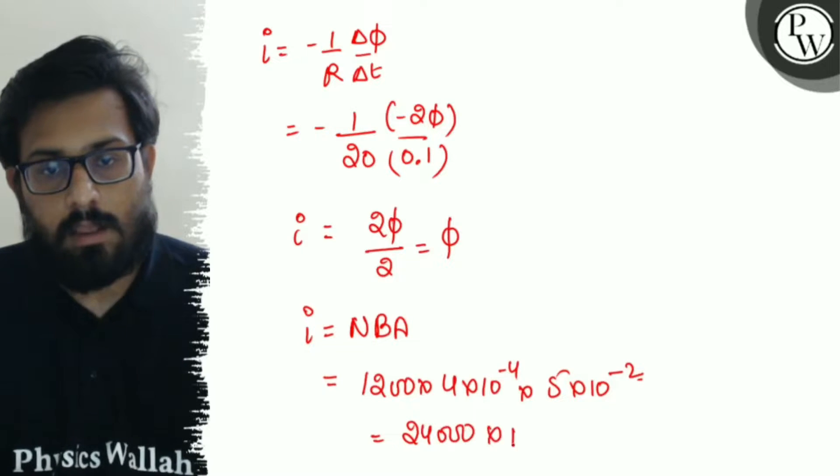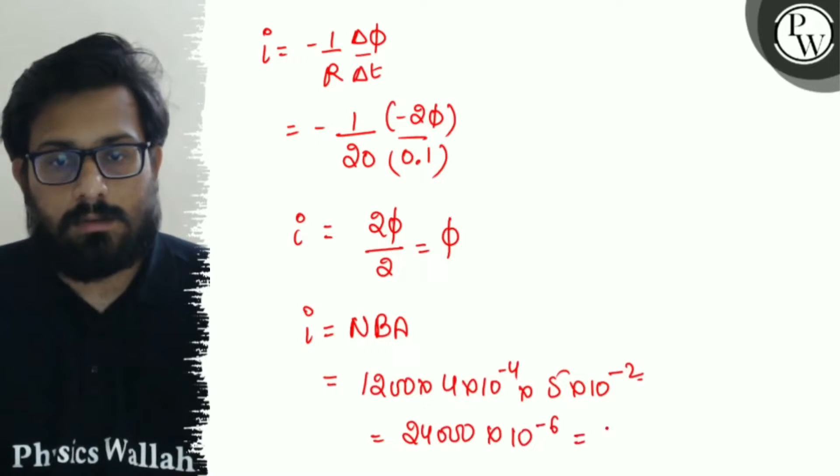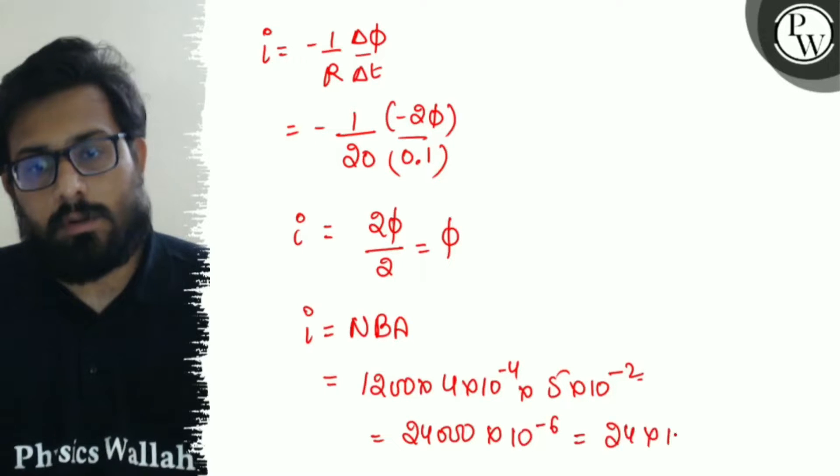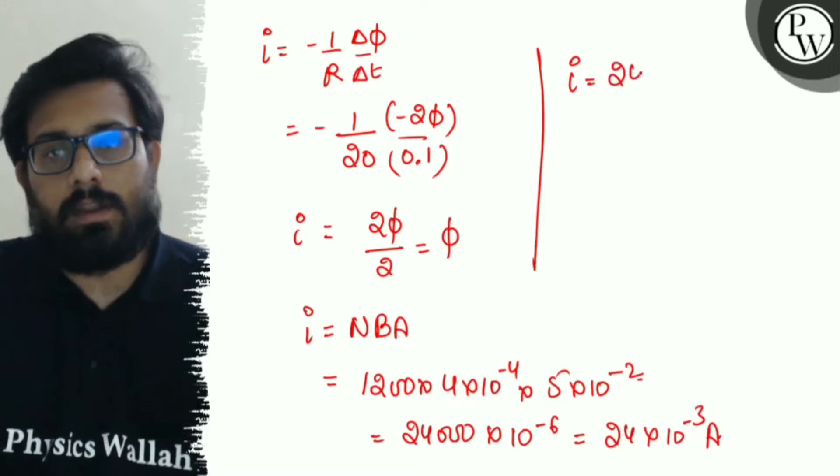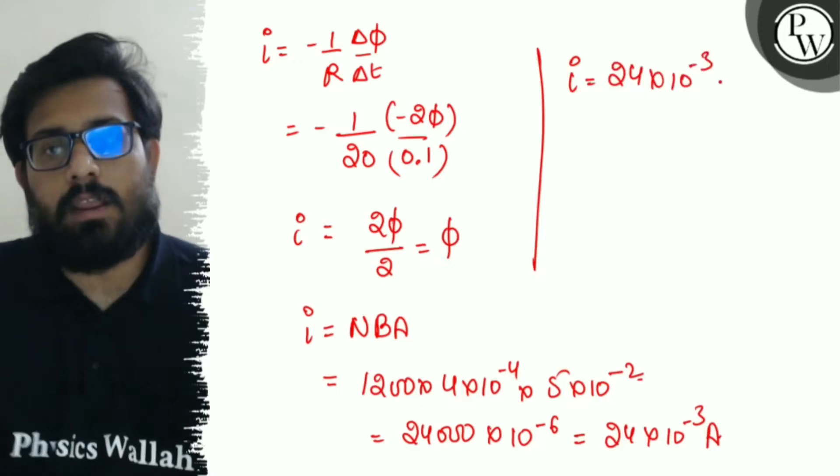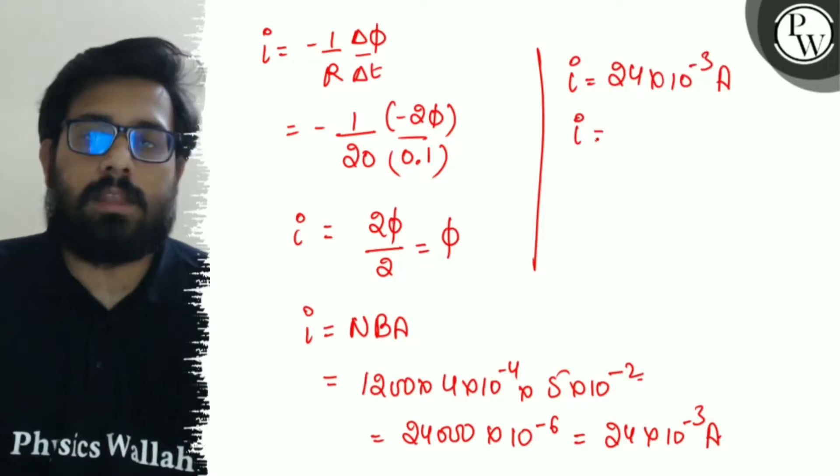Solving it gives 24×10⁻³ ampere, which is the value of current.